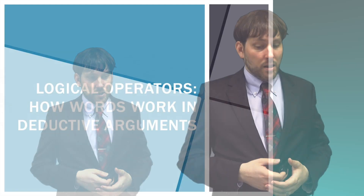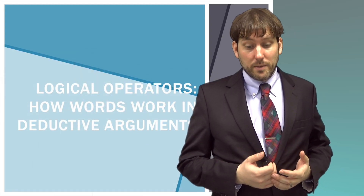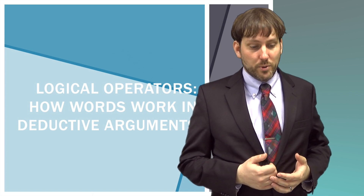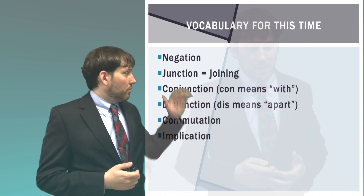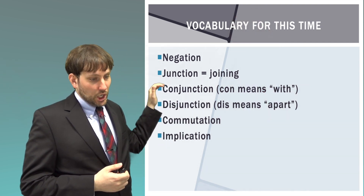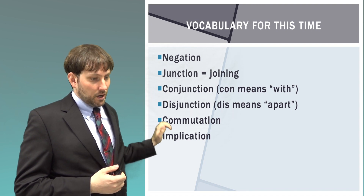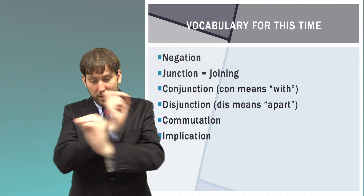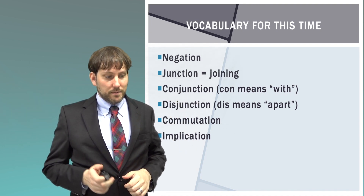Now I want to show you operators — more specifically, these if, then, and, or, not words that we've been using, and explain how they function in logic. Negation means not. Junction means joining. Conjunction means with joining. Disjunction means apart joining. Commutation means that you can switch things back and forth. And implication is a big word for if, then.